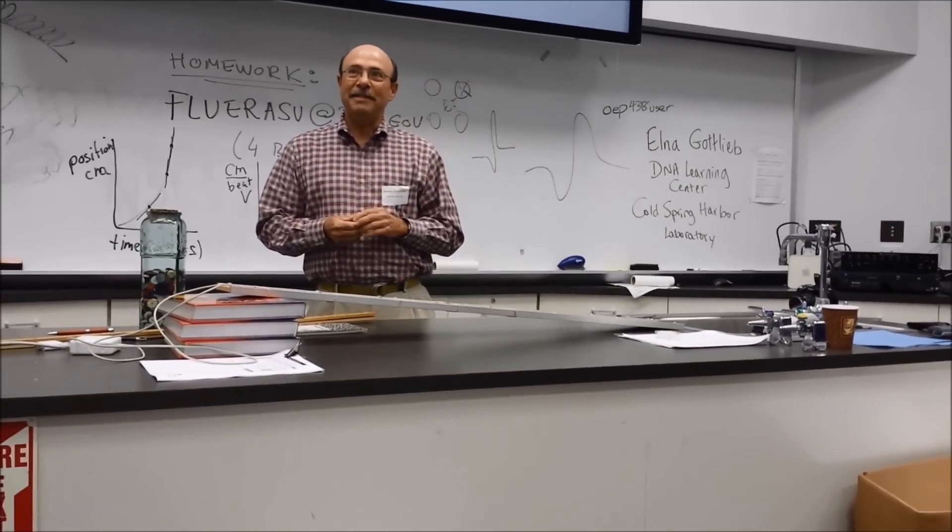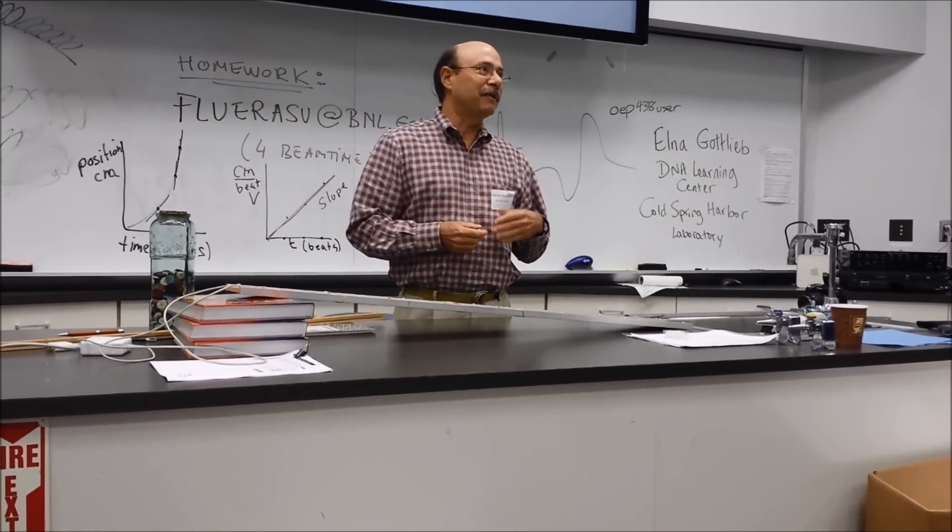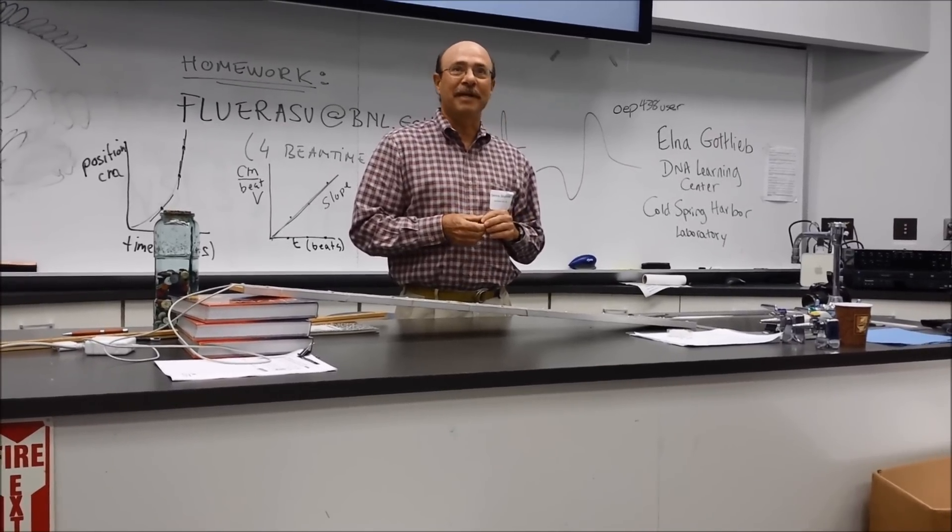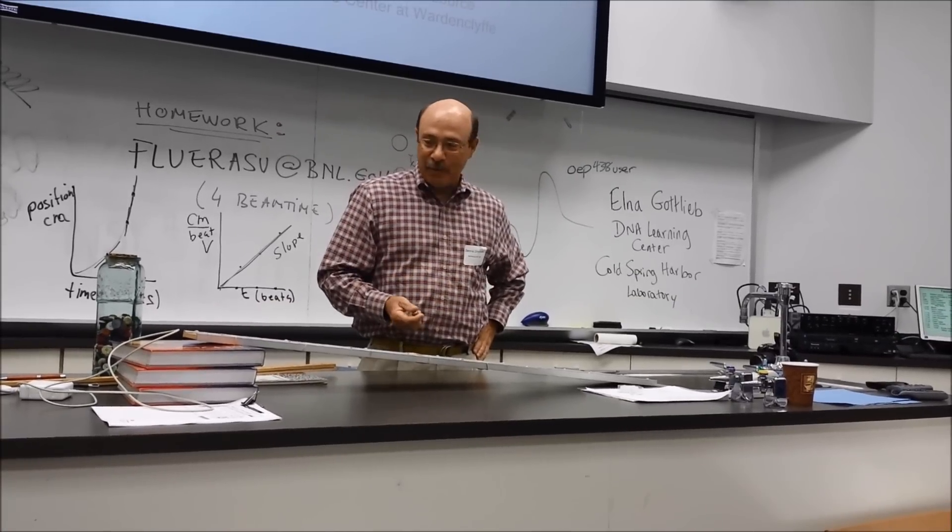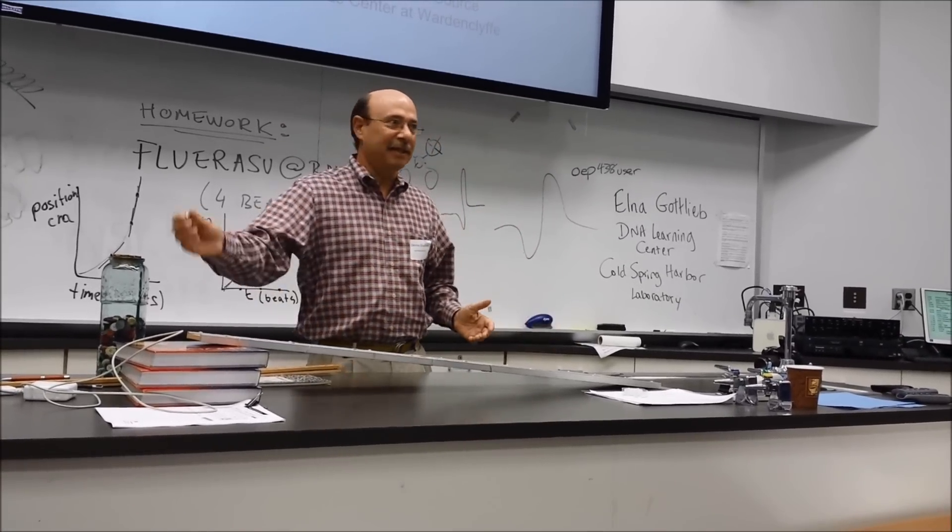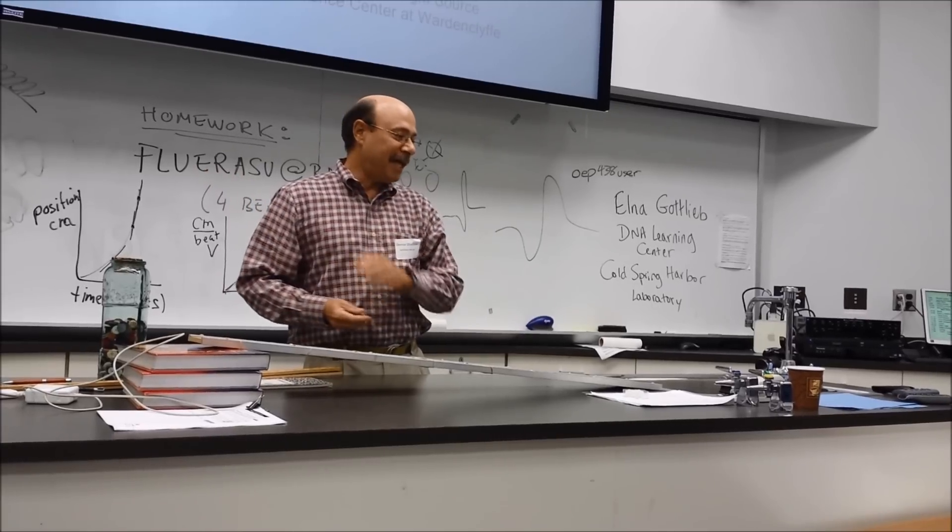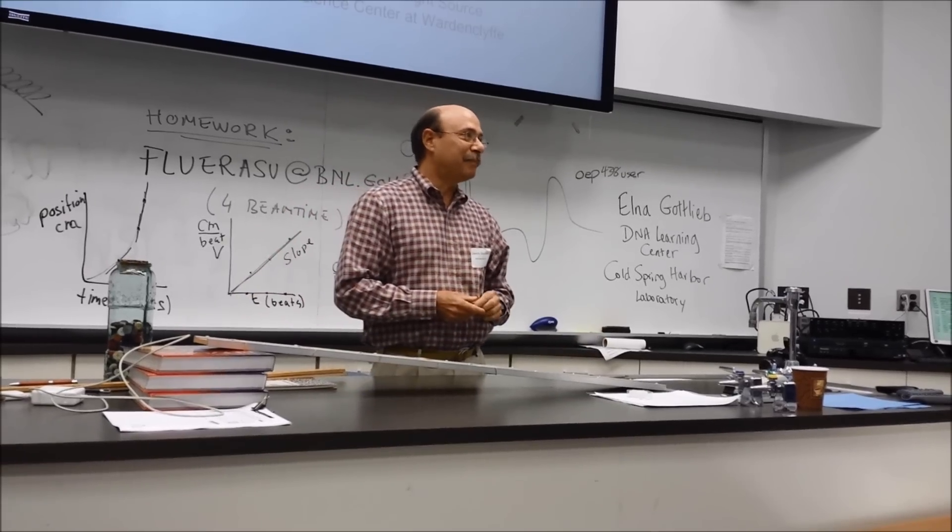When I start to present this, I tell them how Galileo was the first one who actually figured out what the relationship between position and time was for a constantly accelerating object. One thing that we know he did was that he set up inclined planes and he rolled balls of different masses and sizes down the ramps and that he used his pulse to time how long it took to go down the ramp.